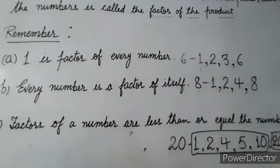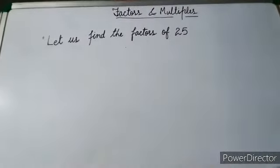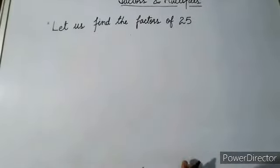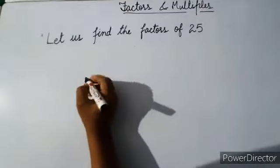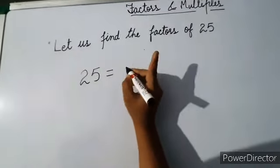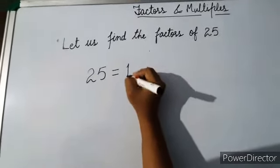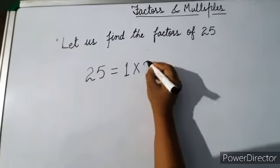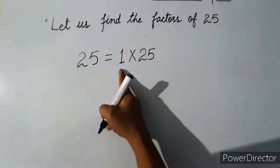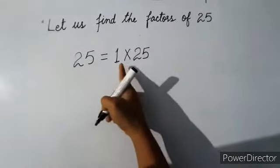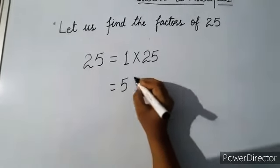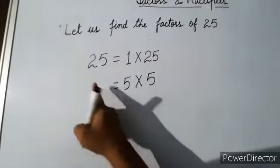Now let us find the factors of twenty-five. Always start from one, because one is the factor of every number. So one times twenty-five is twenty-five. Then five — five times five is twenty-five. Any number comes in its own table that many times: for example, one's table has twenty-five appearing twenty-five times.